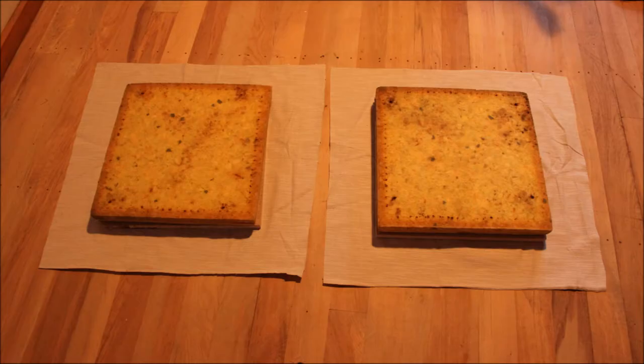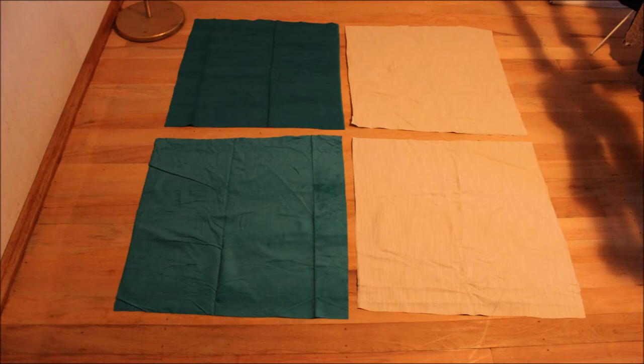For the fabric we left about a 10cm allowance around all of the edges. And we decided to put a lining underneath the actual fabric just for strength and durability. Now with your lining fabric wrong side up, you want to first place down your sponge in the middle. And then over the top of that put your piece of wood.